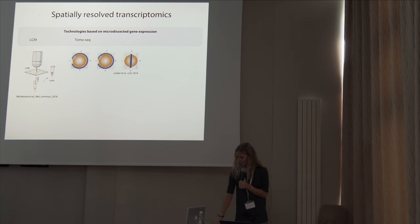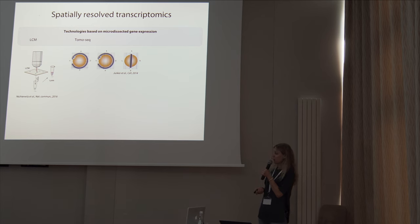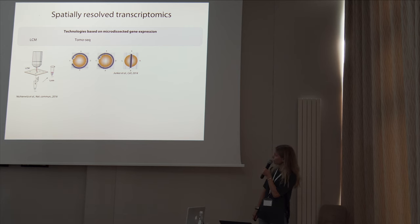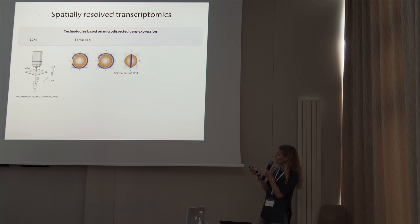Another way is TomoSeq, a cryo-sectioning approach where you use biological samples, cryo-section them, and analyze each section individually. If you use three identical biological samples — for example a model organism like zebrafish — and cryo-section these into all three main axes of the body, you could computationally create a 3D transcriptional map of the embryo.